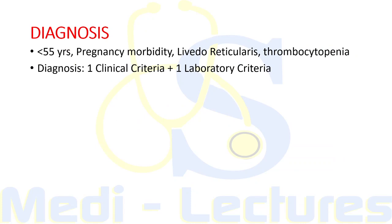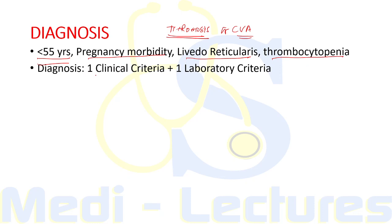For diagnosis, APS should be seriously considered in cases of venous or arterial thrombosis, cerebrovascular accident — typically in patients less than 55 years — pregnancy morbidity associated with livedo reticularis, or thrombocytopenia. For a definitive diagnosis, at least one clinical criterion and one laboratory criterion must be fulfilled.